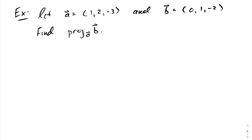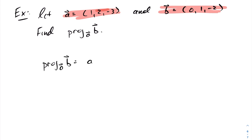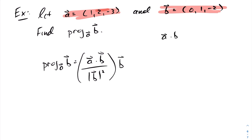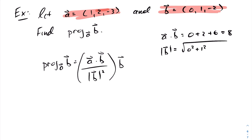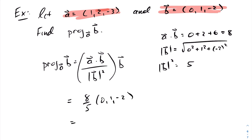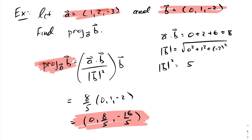In our last example in R3, we're given two vectors A and B and we want to find the projection of A onto B. The projection of A onto B equals (A·B over |B|²) times vector B. A·B equals 0 plus 2 plus 6, which is 8. The magnitude of B is √(0² + 1² + (−2)²), so |B|² equals 5. Substituting in, we get 8/5 times vector B. Since vector B is (0, 1, −2), the projection of A onto B is (0, 8/5, −16/5). That concludes today's lesson on projection vectors.